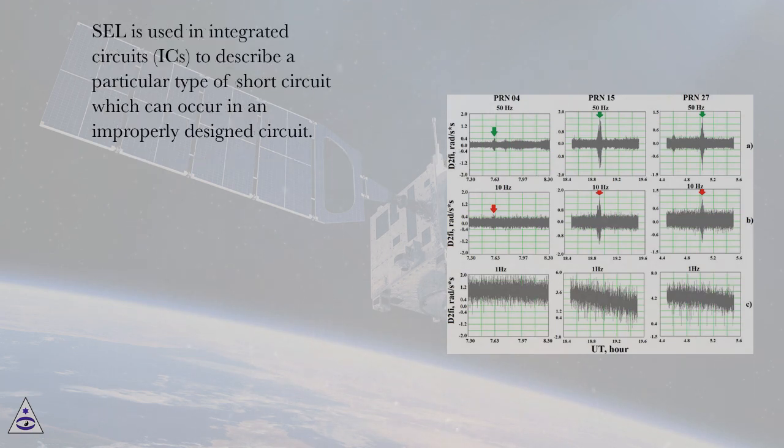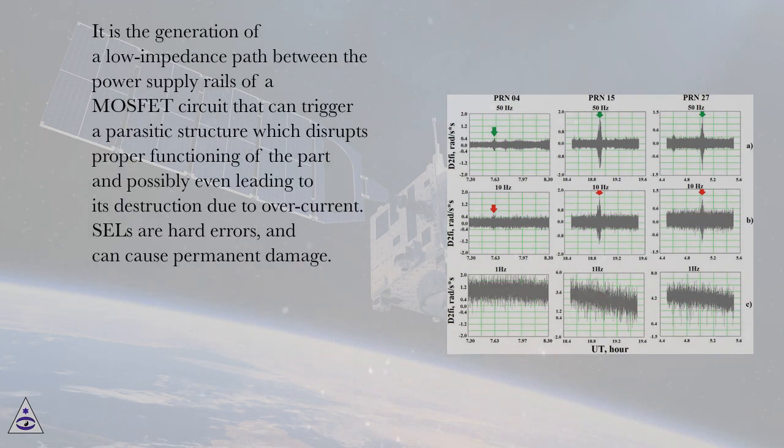SEL is used in integrated circuits (ICs) to describe a particular type of short circuit which can occur in an improperly designed circuit. It is the generation of a low-impedance path between the power supply rails of a MOSFET circuit that can trigger a parasitic structure which disrupts proper functioning of the part and possibly even lead to its destruction due to overcurrent. SELs are hard errors and can cause permanent damage.